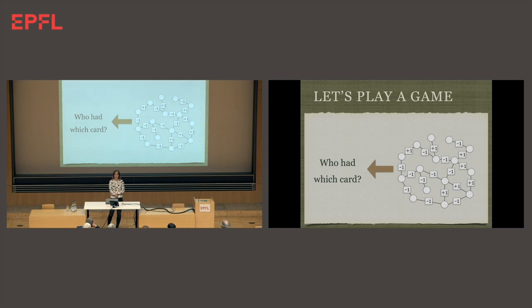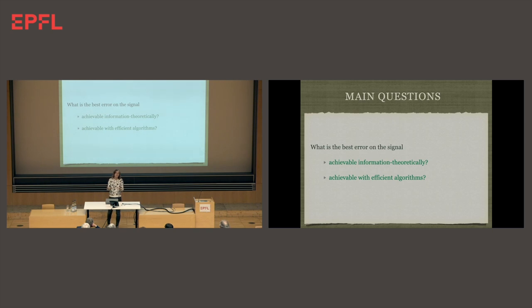From the answers without the colors, I should guess who had which card. So can I do it or not? That's a computational problem. It looks a bit like on a high level the graphs that Annemarie was showing. How do I answer that? What are the main questions? What is the best error on the signal? What is my best split into the room in two groups? What is achievable information theoretically? And what is achievable given that I want to be able to do it with efficient algorithms? Those are two different questions, and the distinction between them is important.